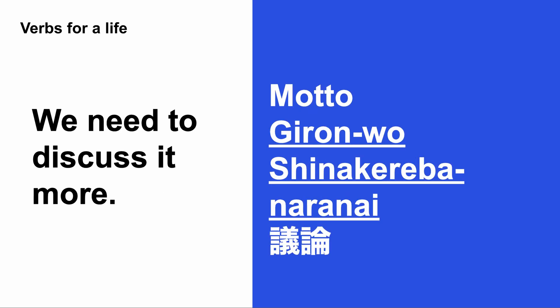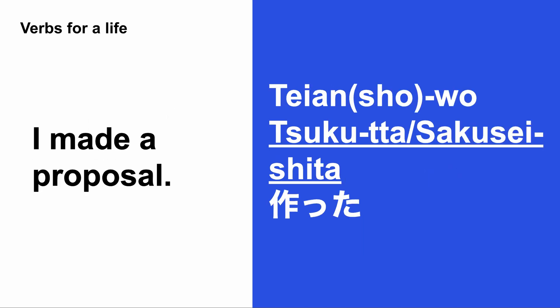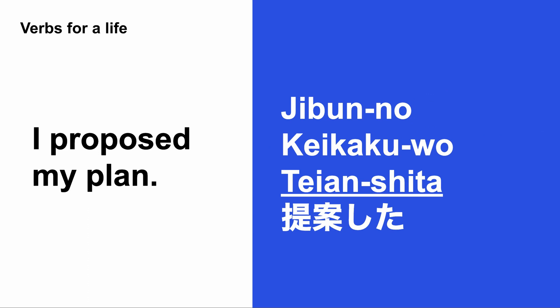We need to discuss it more: もっと議論をしなければならない. I made a proposal: 提案書 / 提案を作った or 作成した / 提案を作成した. I proposed my plan: 自分の計画を提案した. 計画 means plan, 自分 means mine.